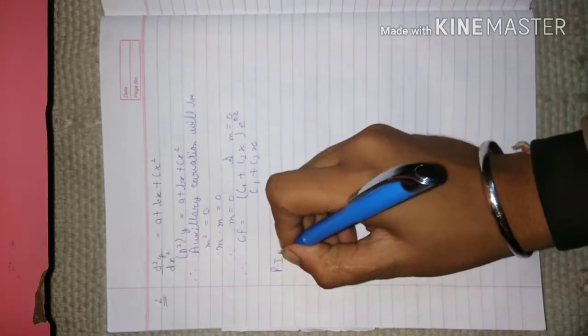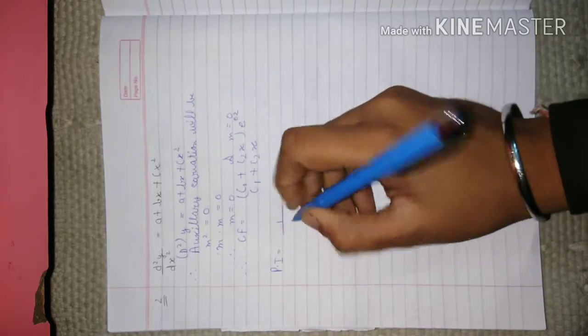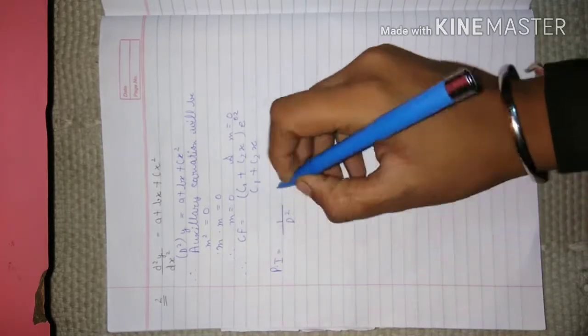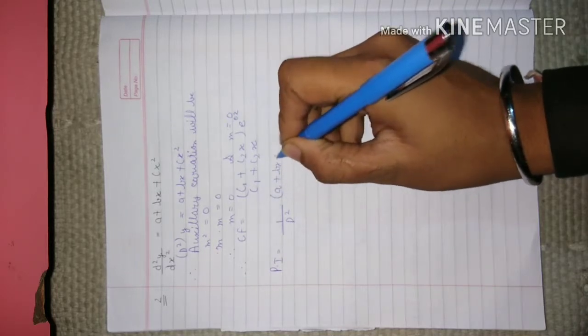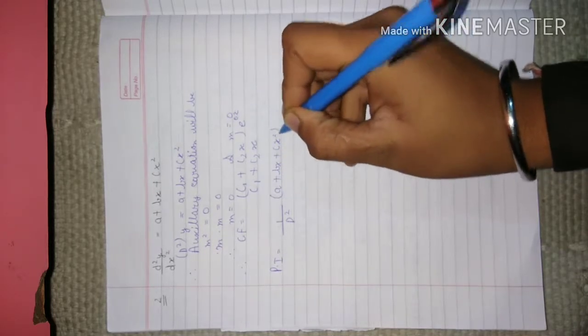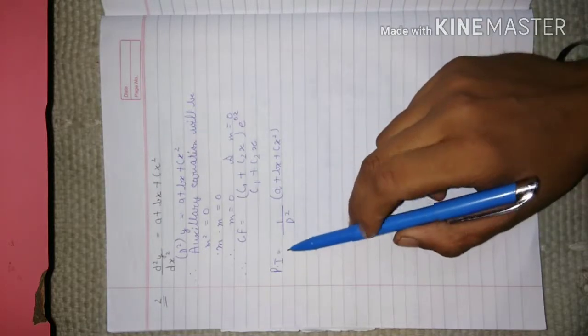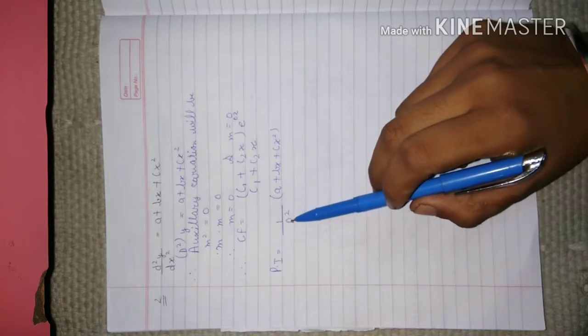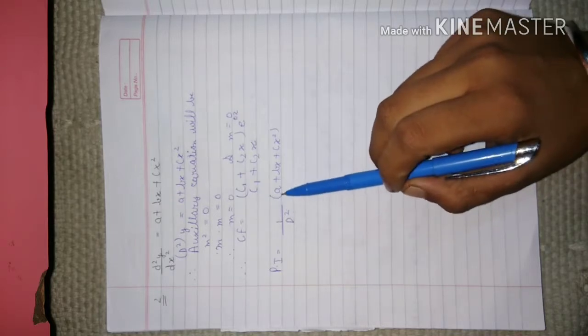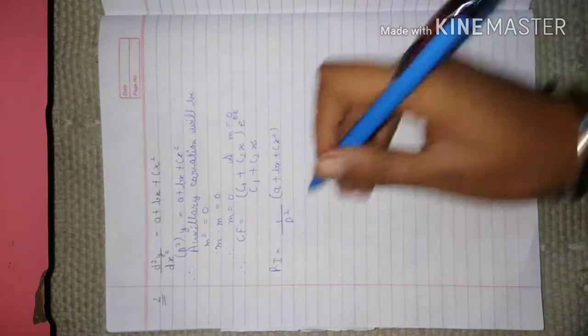Now we find the PI. PI will be 1/D² × (a + bx + cx²). The PI is simple—it contains only D². We have to do double integration of a + bx + cx².